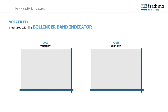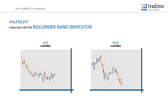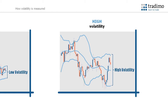Another very common tool used to measure volatility is the Bollinger Band Indicator. Bollinger Bands display the volatility slightly differently. Several lines are applied to the price action, which squeeze together when volatility is low, and expand when it increases. An asset with expanded bands has a high volatility.